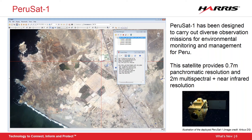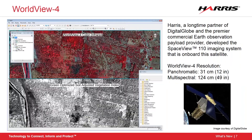The last sensor added to ENVI is WorldView 4, the latest sensor from DigitalGlobe, a business partner with Harris Corporation. A fun fact is that the imaging system for WorldView 4 was developed by Harris Corporation and provides excellent resolution for remote sensing applications, with a pan-sharpened resolution of 0.3 meters. This high-resolution imagery allows you to see the surface of the earth in extraordinary detail. Here's a sample image.